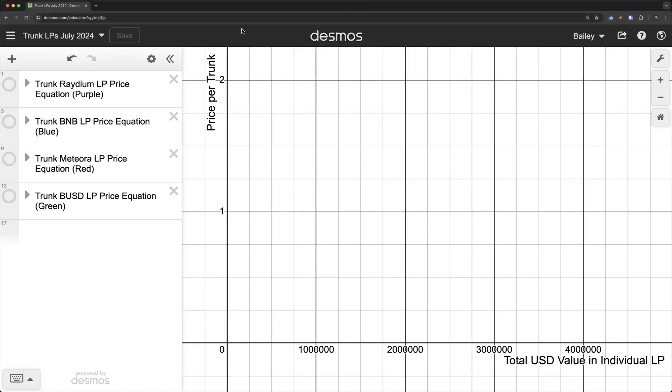And why that is a focus and try to get a lot of trunk out of that pool and bridged over to Solana. We're going to start off with the four major liquidity pools, beginning with the one that has the least amount of liquidity: the Raydium pool on Solana. What this graph is going to show you is the amount of USD value in the liquidity pool here on our x-axis. That's our input. And then our y value or output is going to be the price per trunk.